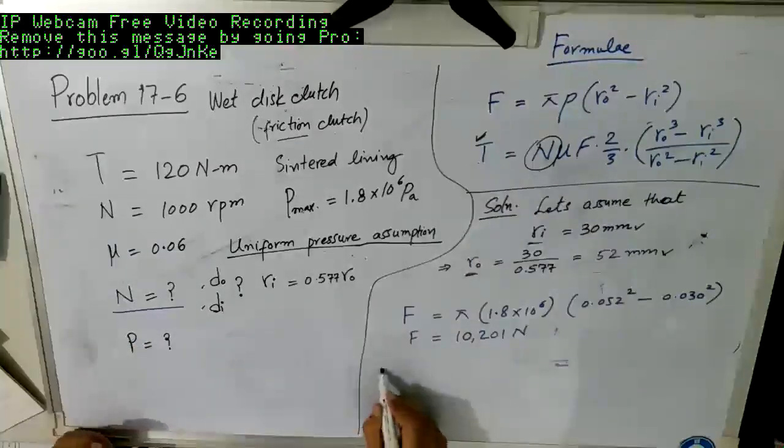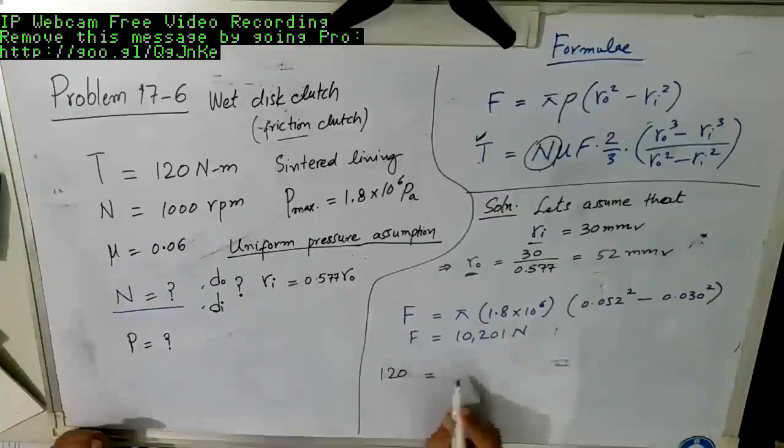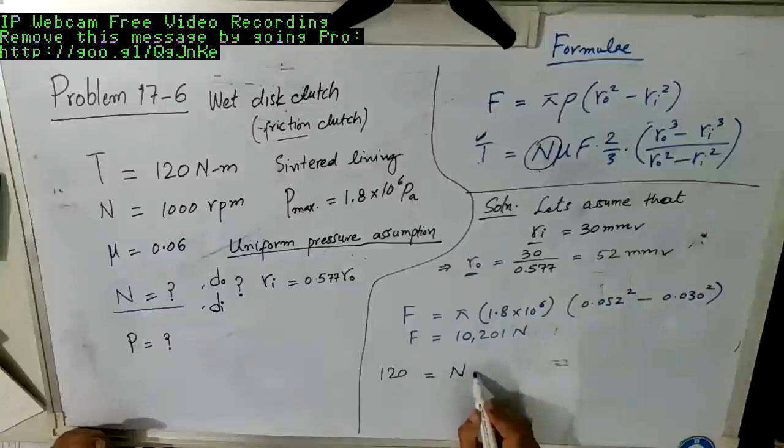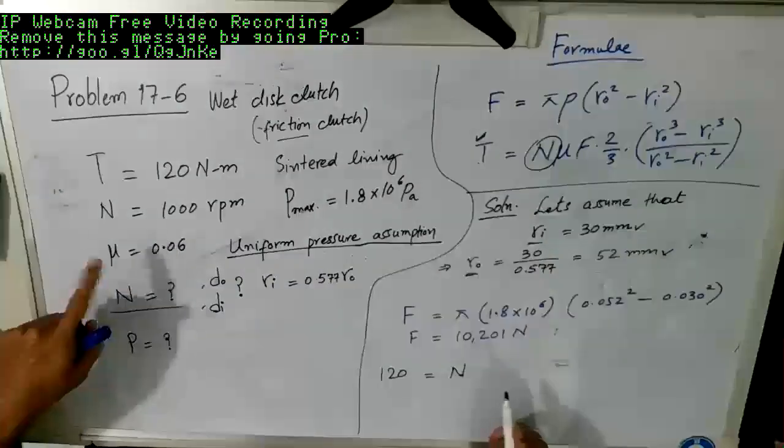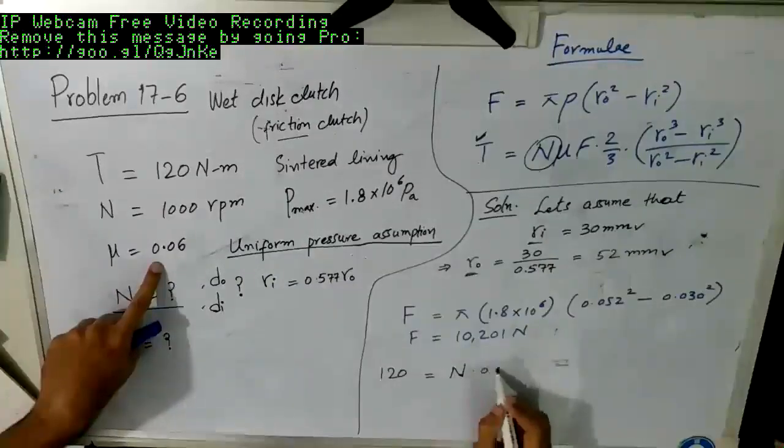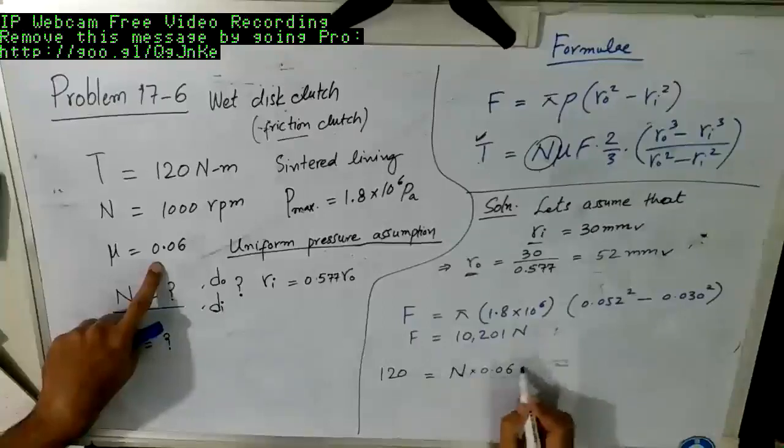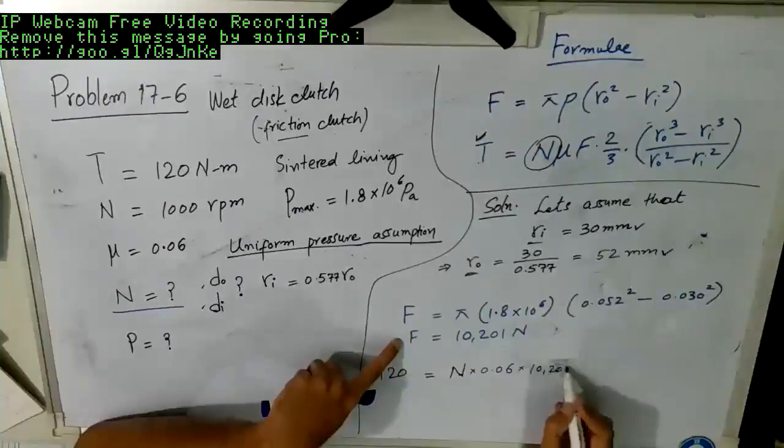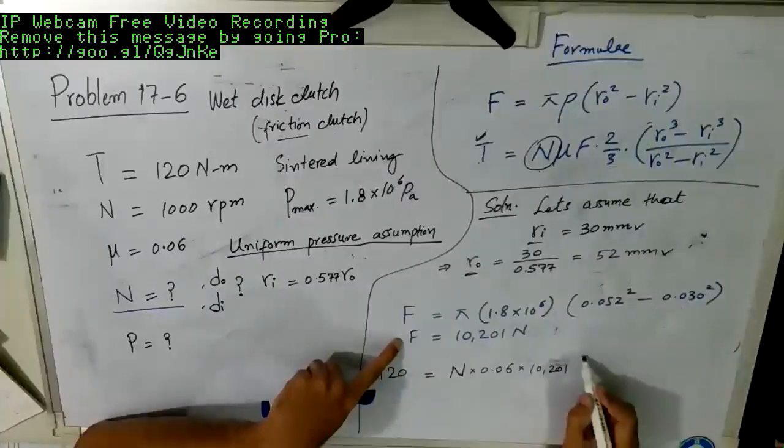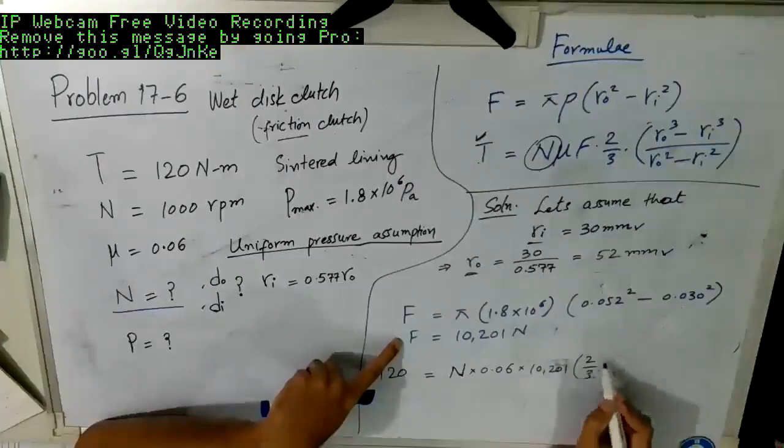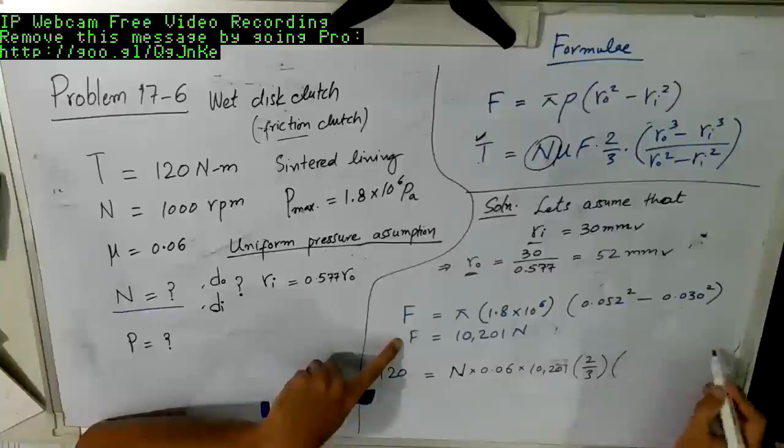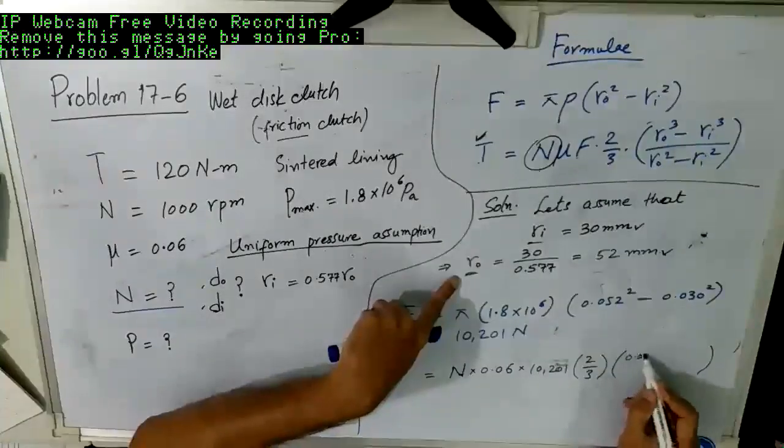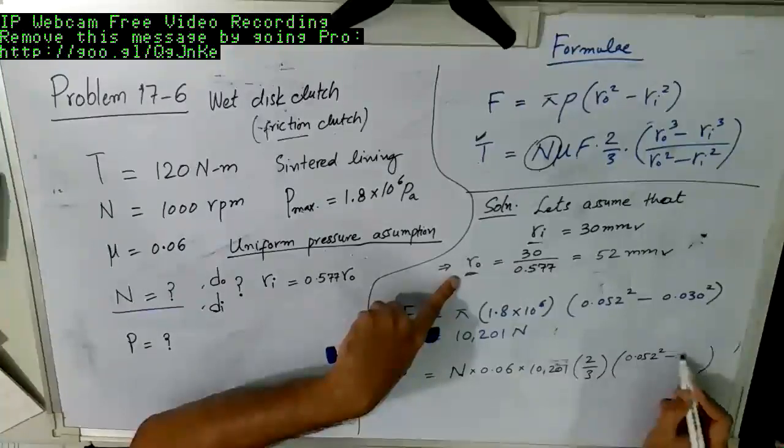So I can put 120 in terms of torque, and then I will have N which is unknown. And then I have mu, mu is given as 0.06. This F we just found out 10,201.